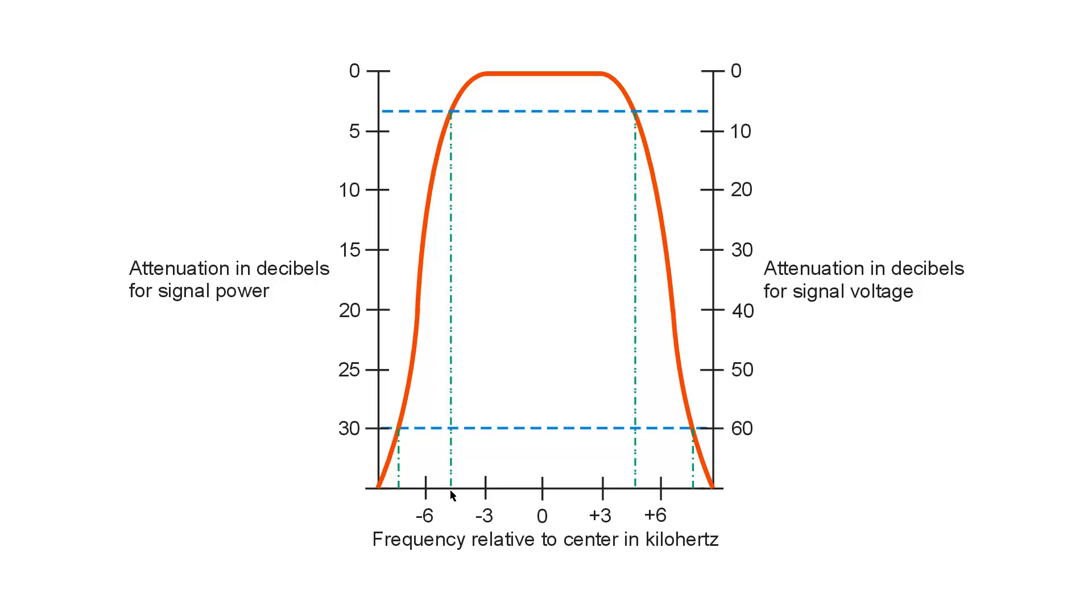Maybe around 5 on this side, 5 kilohertz below and 5 kilohertz above. So, say the bandwidth is 10 kilohertz total at 3 decibels down for power or 6 decibels down for voltage. 10 kilohertz.